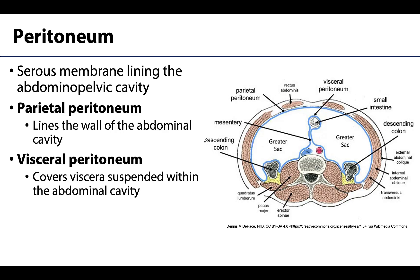So let's start with what the peritoneum is. The peritoneum is a serous membrane — in fact it's the largest serous membrane of the body — and it lines the abdominopelvic cavity. Note that I did say pelvic cavity as well, as it does extend and end in the pelvic cavity, so we'll be talking about that peritoneum even when we move into that region of anatomy.